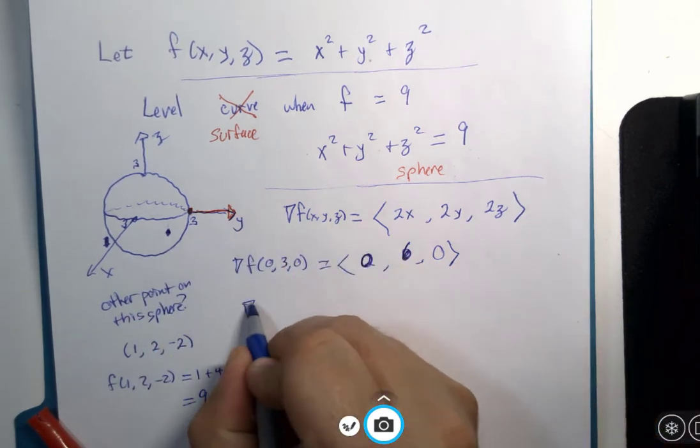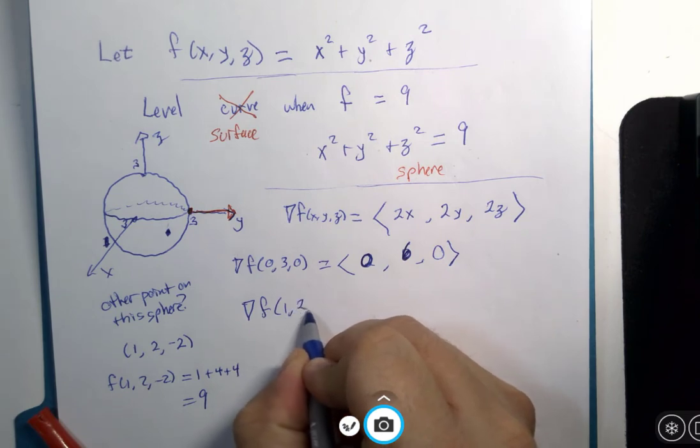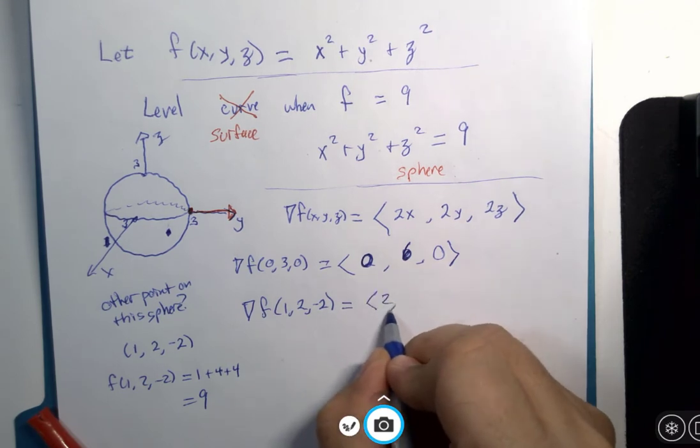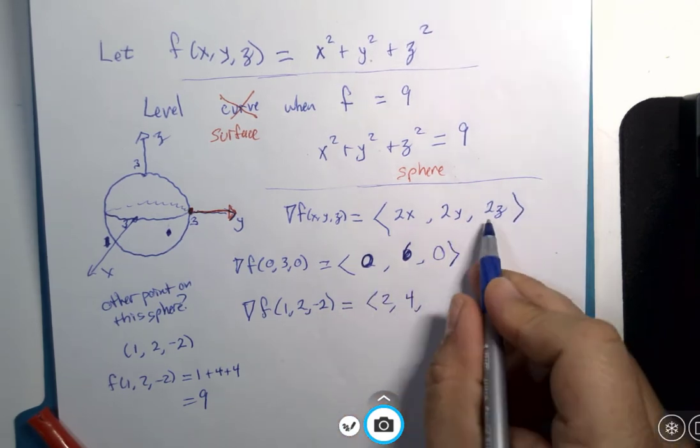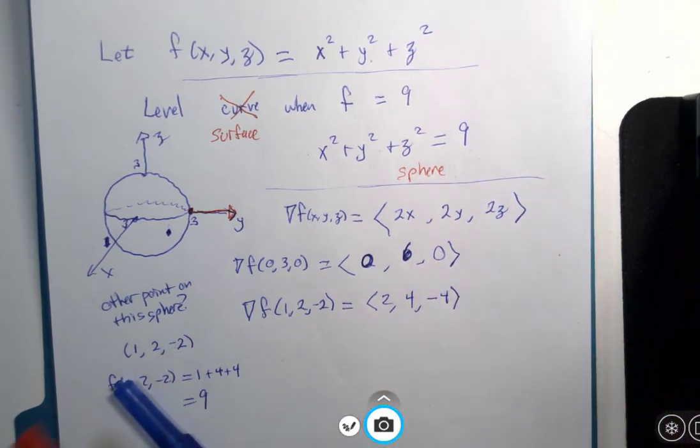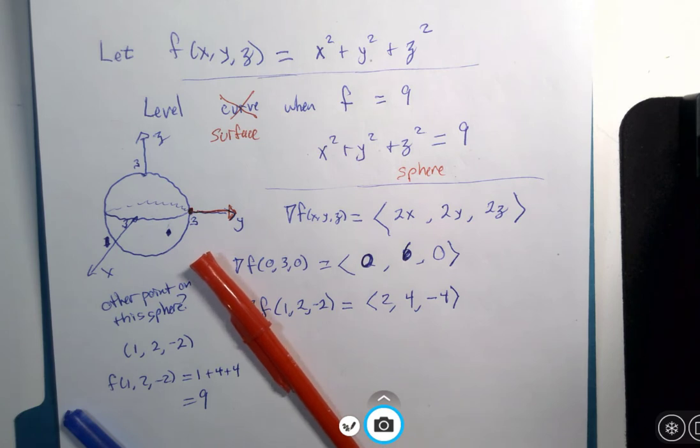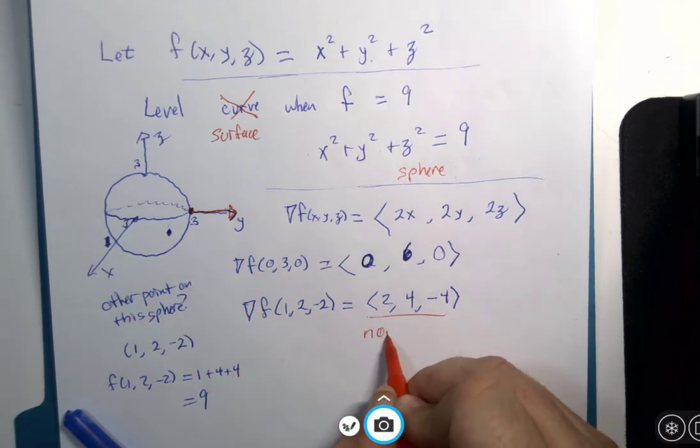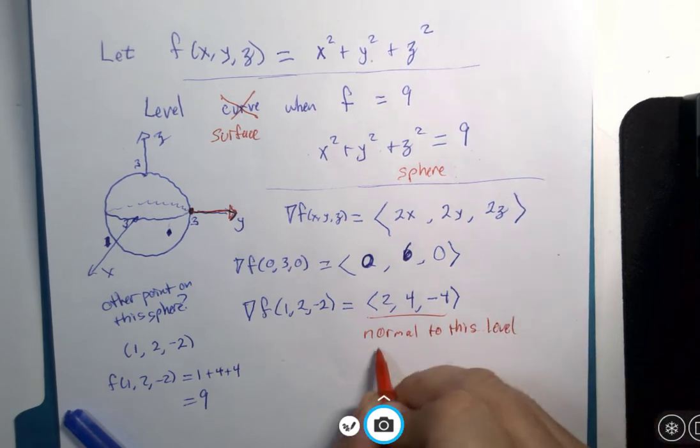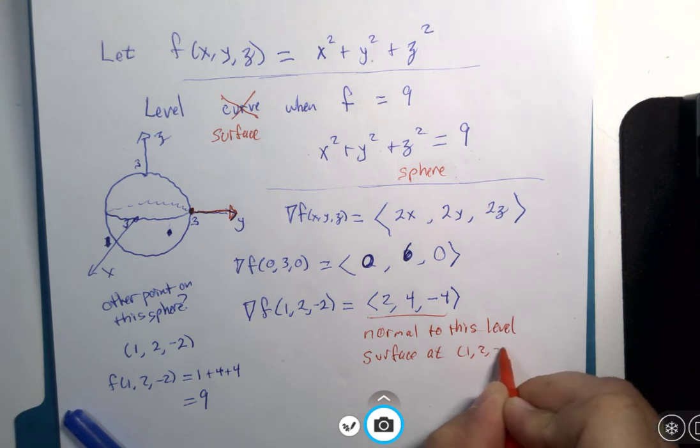The gradient of that point, sorry, at that point on this surface, 2 times 1 is 2. 2 times 2 is 4. 2 times negative 2 is negative 4. That would be a vector that points directly out of this point in the x, y, but negative z direction. That would be normal to this level surface at the point 1, 2, negative 2.